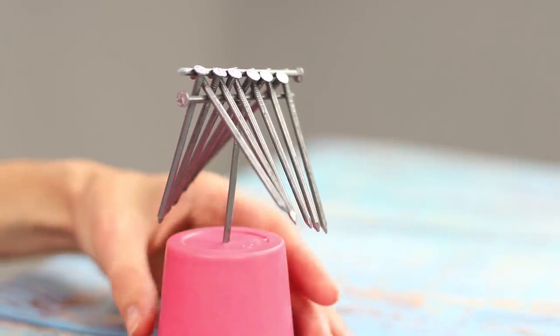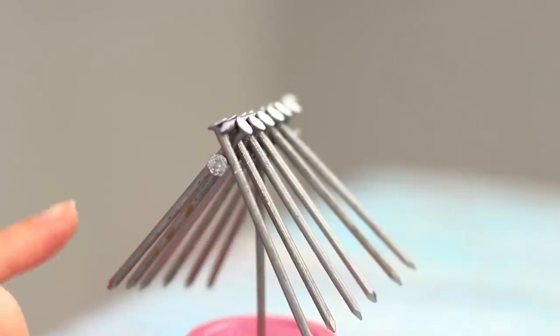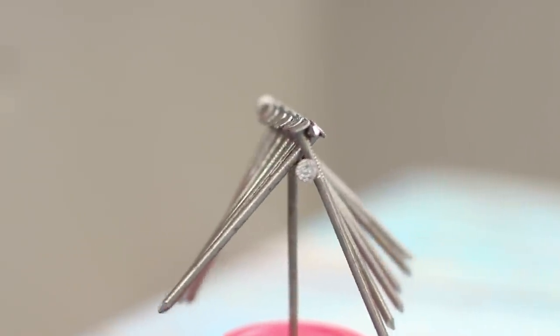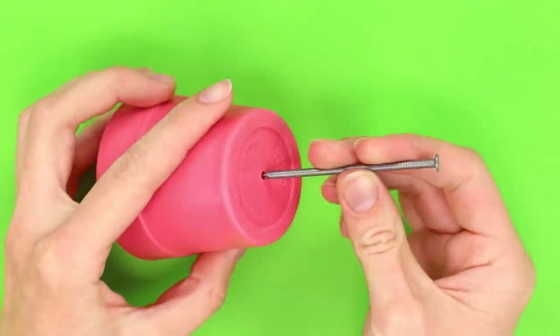And now, attention! On air, the nail of our circus program is a balancer from nails! Make a hole in the bottom of a plastic cup and insert a nail into it.